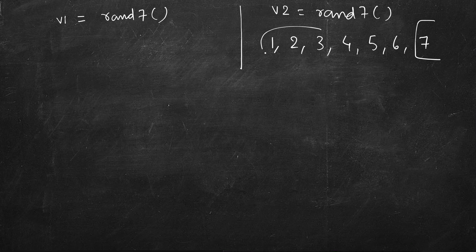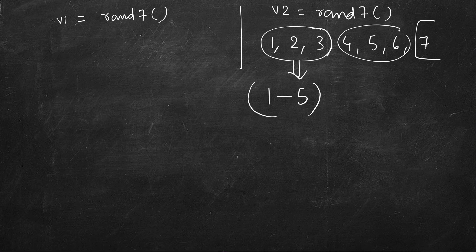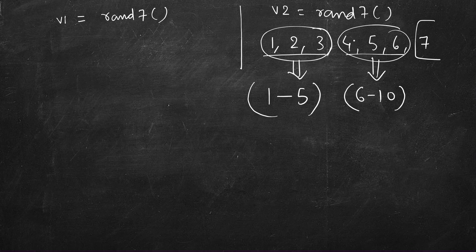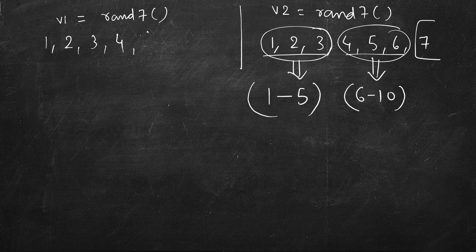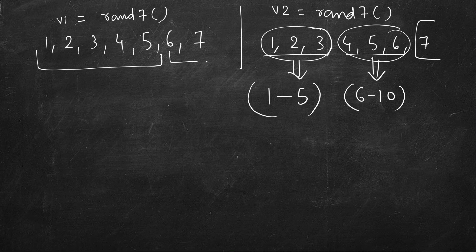Since 7 is odd, we ignore 7 and take the remaining six values: map 1, 2, 3 to one-to-five and 4, 5, 6 to six-to-ten. These six values have equal probability of appearing; we always ignore 7. To map to 1 to 5: if we get a value from 1 to 5 we save it in v1, otherwise we roll again.